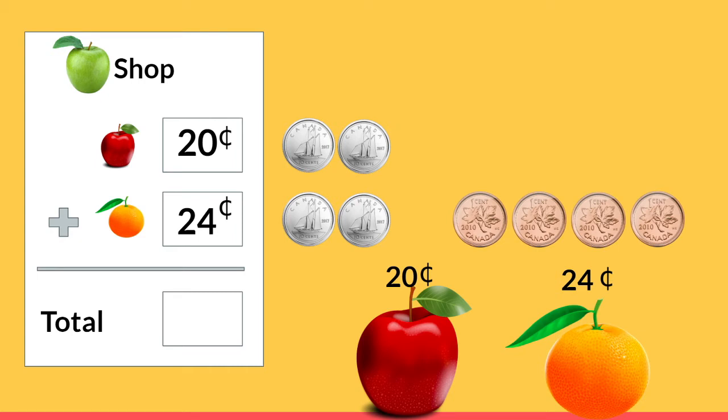I'm going to start with the pennies. We have zero pennies plus four pennies, and zero plus four equals four. And now we're going to add the dimes and we have two dimes plus two more dimes. Two plus two is four. 44 cents.